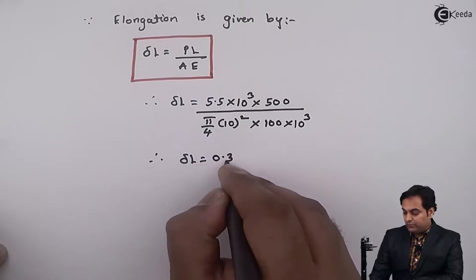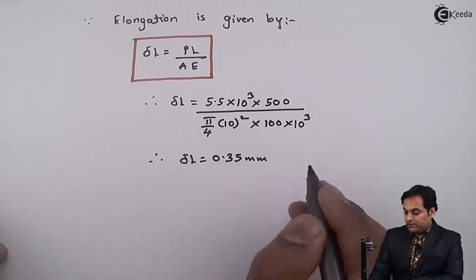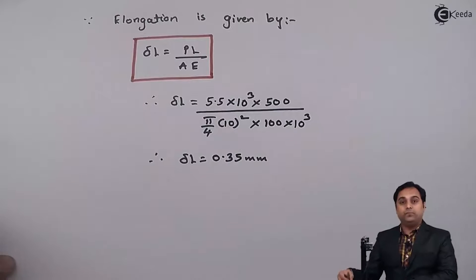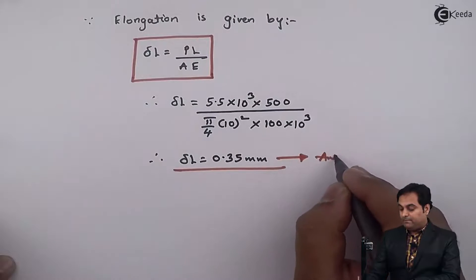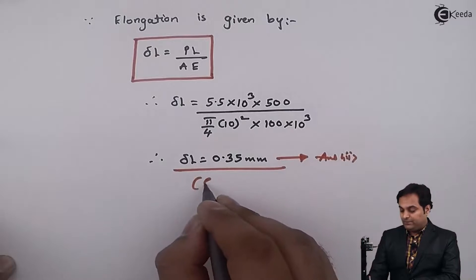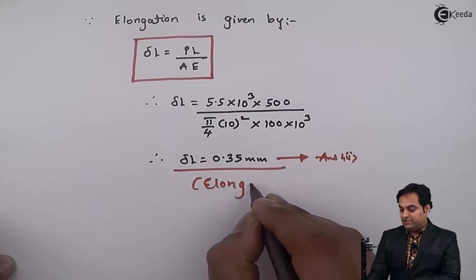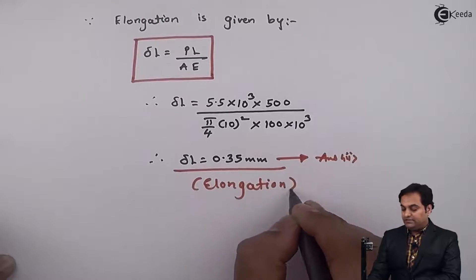I will get my answer of deflection as 0.35 mm. And since the rod is being pulled, this deflection is nothing but it is elongation. That is, it causes increase in length and decrease in diameter.